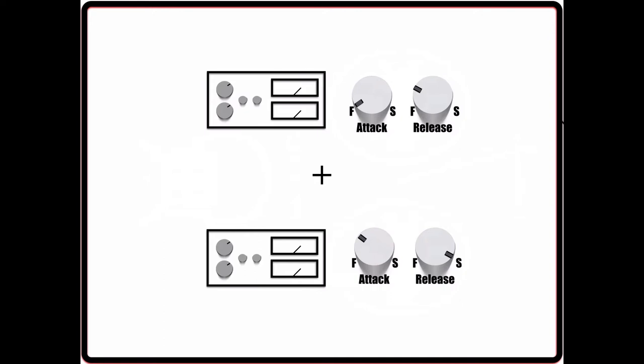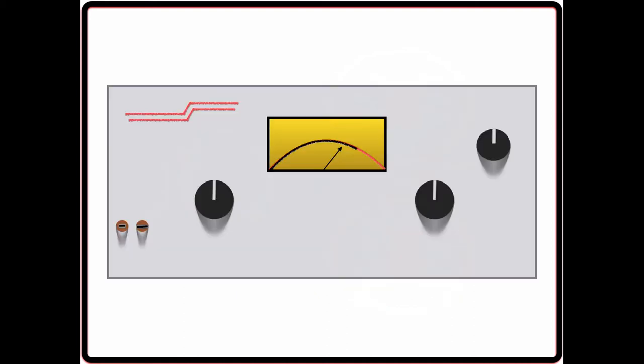What I mean by modify each compressor is instead of only having one set of attack and release controls, you now theoretically have two. You could use one of these 3 to 1 compression stages to tackle the transient of the sound and the other to tackle the sustain, spreading out the compression over the entire sound element. On top of this, you can also take advantage of different types of compressors if you're not using your standard compressor plugins that have attack and release.